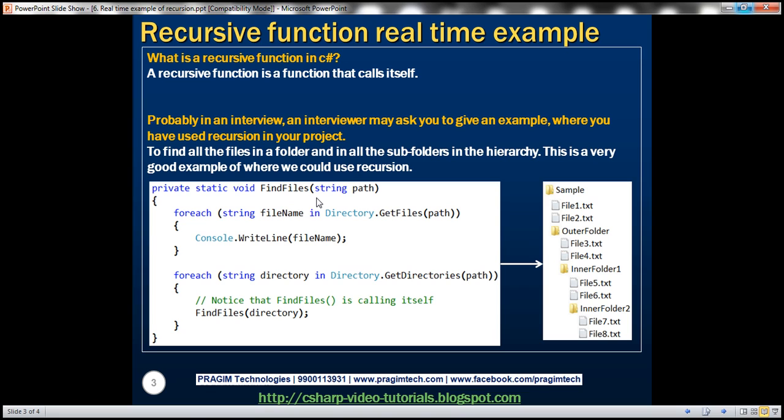First of all this method has got a parameter which is nothing but the path of the folder structure. So once we give it that path look at that there are two foreach loops. The first foreach loop is invoking the GetFiles static method. So this is going to give all the files within the given folder, only the files not the folders.